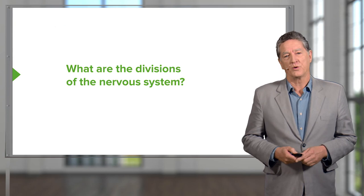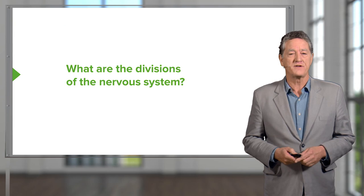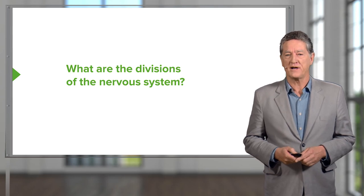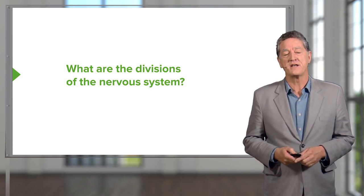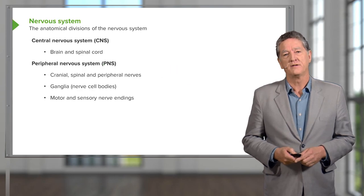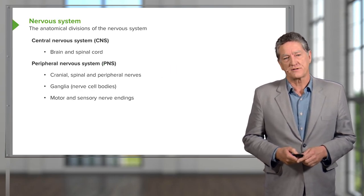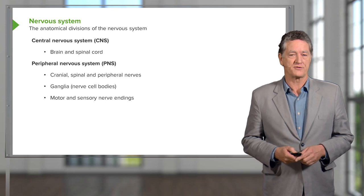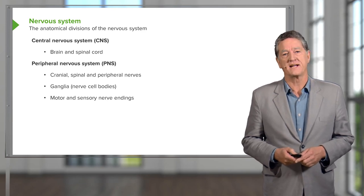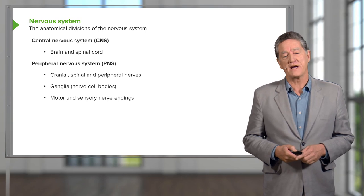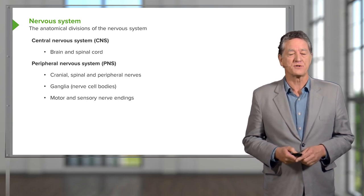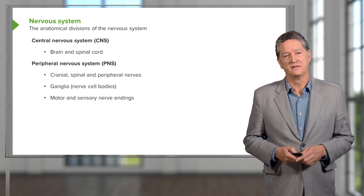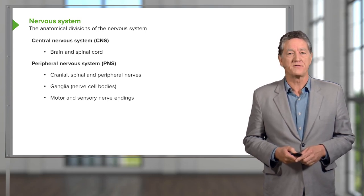It's very important that we first start with the description of the divisions of the nervous system. We can divide the nervous system anatomically — it consists of two parts. One is the central nervous system, abbreviated CNS, and that consists of the brain and the spinal cord. The brain is protected inside the cranium, the skull, and the spinal cord is protected by the vertebral column.